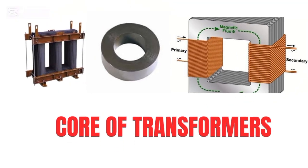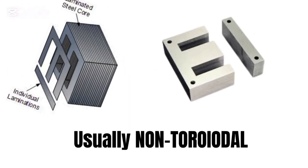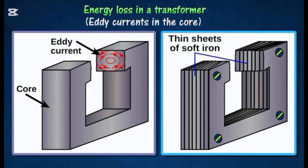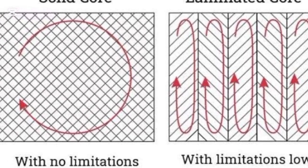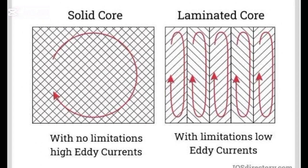The core of a transformer is made of special steel, cold rolled, grain oriented, or CRGO, and is built in thin layers or laminations to reduce energy loss. This design helps focus the magnetic field while reducing heating from unwanted currents. Laminations break up the flow of wasteful electric currents inside the metal.